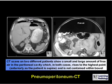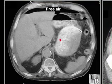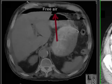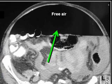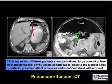These are two CT scans showing one patient with a small amount of free air and another with a large amount. Since the scans are done with the patient supine, the air rises to the highest point, just underneath the anterior abdominal wall. Importantly, in both cases the air is not contained within the bowel.